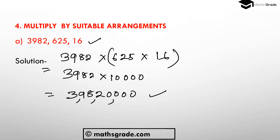When multiplying numbers using suitable arrangements, identify which two numbers multiply to give a round number easily, multiply those first, then multiply the result with the third number. Here, 625 multiplied by 16 gives 10,000, and multiplying 10,000 by 3982 just requires writing the digits and adding zeros. This is the easiest way to multiply three numbers using suitable arrangements.